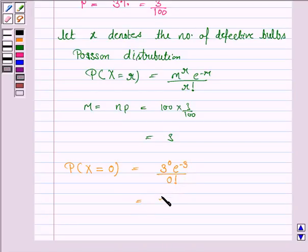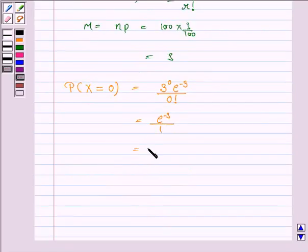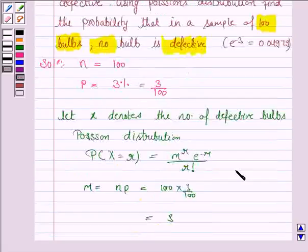3 to the power 0 is 1, E to the power minus 3 upon 0 factorial. 0 factorial is 1. So this is equal to E to the power minus 3, which is given to us as 0.04979.